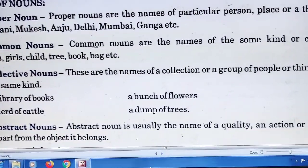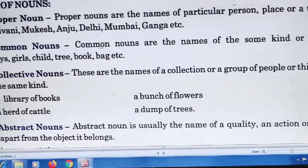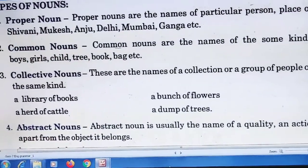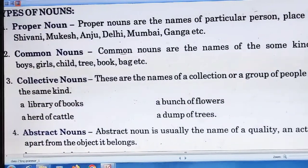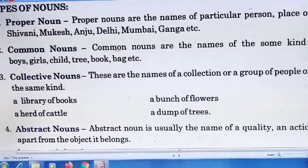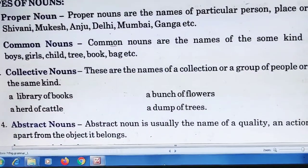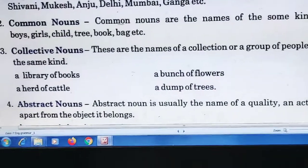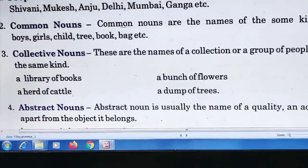Collective nouns are the names of a collection or a group of people or things of the same kind. A collective noun refers to a group — either of people or things of the same type, not different kinds mixed together. For example: a library of books, a bunch of flowers.